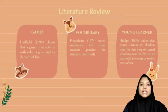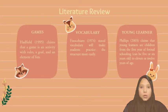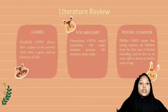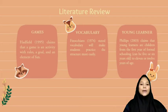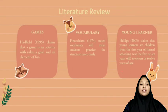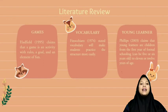Now let's move to the next point — literature review. The first is games. Headfield 1995 claims that a game is an activity with rules, a goal, and an element of fun. There are two kinds of games. The first one is competitive games, in which players or teams race to be the first to reach the goal. The second one is cooperative games, in which players or teams work together towards a common goal. The emphasis in these games is on successful communication, rather than on correctness of language.